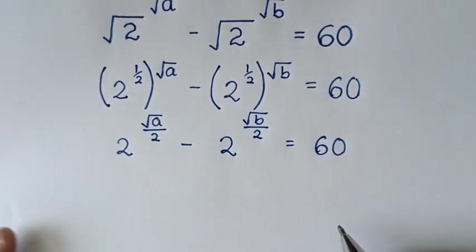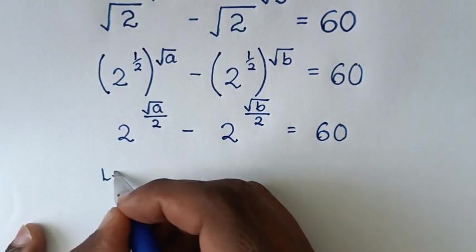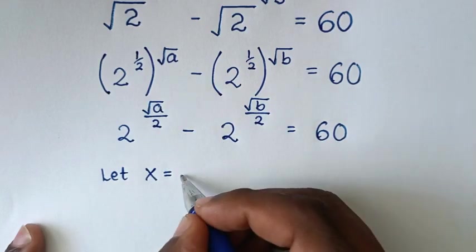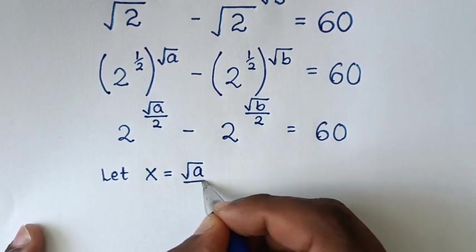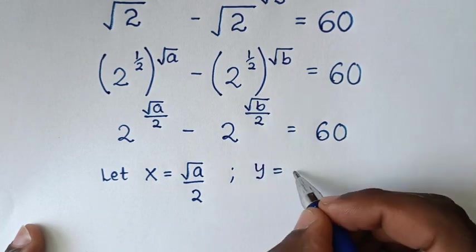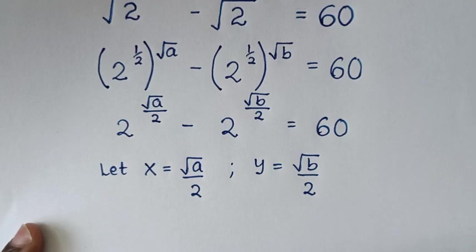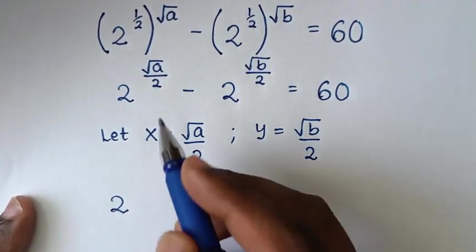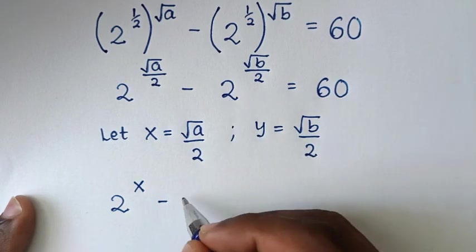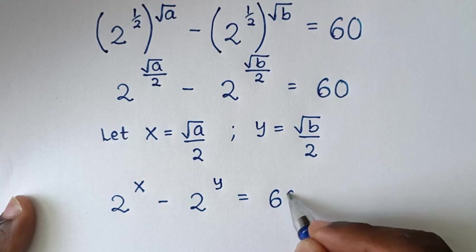Then in the next step, from these powers, we'll let x equal to square root of a over 2, and y equal to square root of b over 2. So it will be 2 power of x minus 2 power of y is equal to 60.